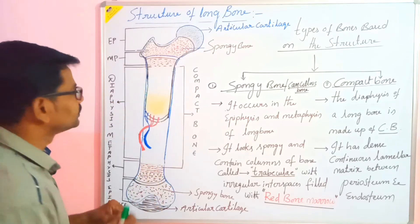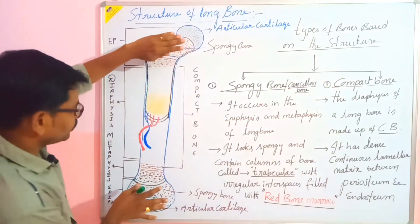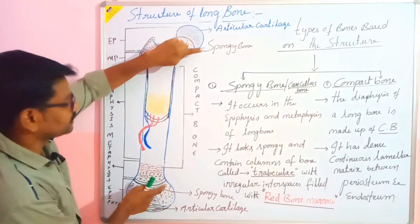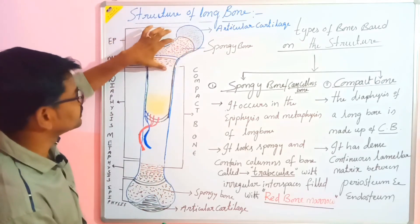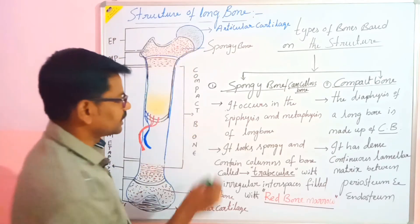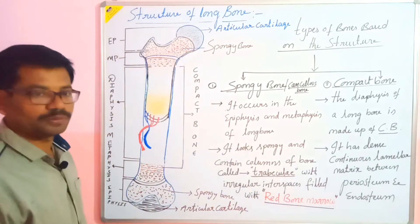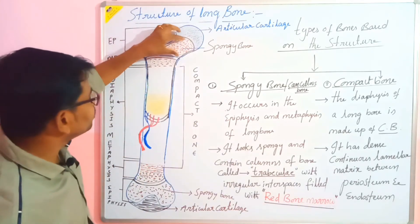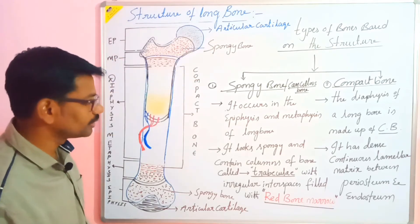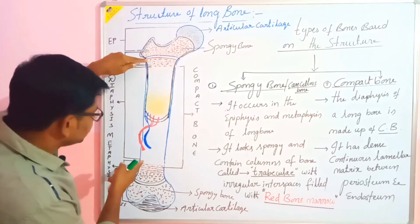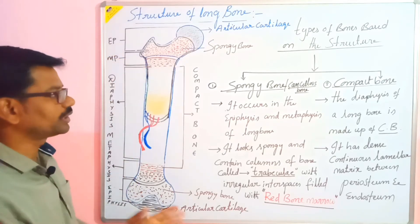The spongy bone also helps to give protection to the compact bone. The ends of the long bone form the spongy bone — from here to here, this is completely made up of spongy bone. In terms of location, spongy bone occurs in the epiphysis and metaphysis of the long bone. The diaphysis of the long bone is compact bone.